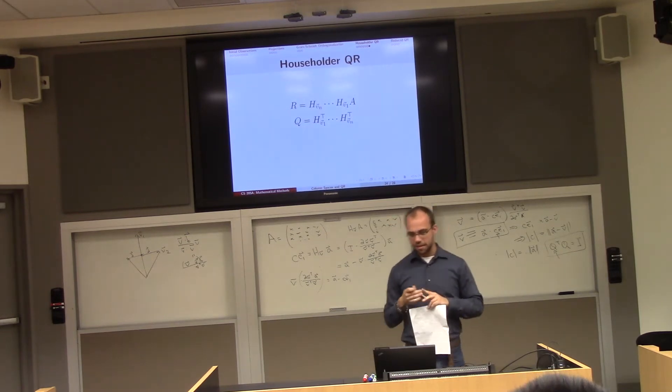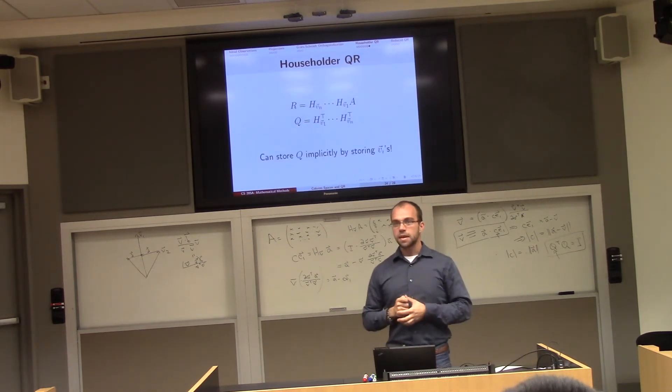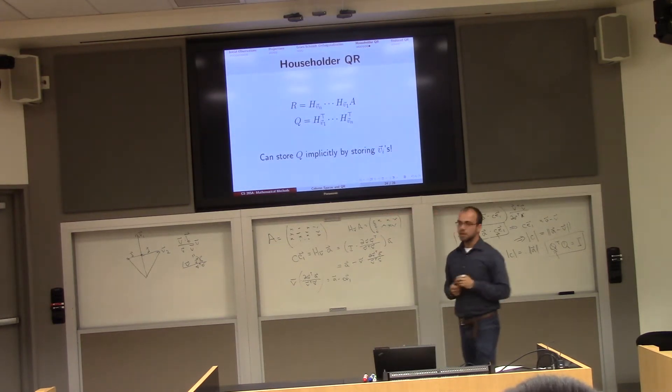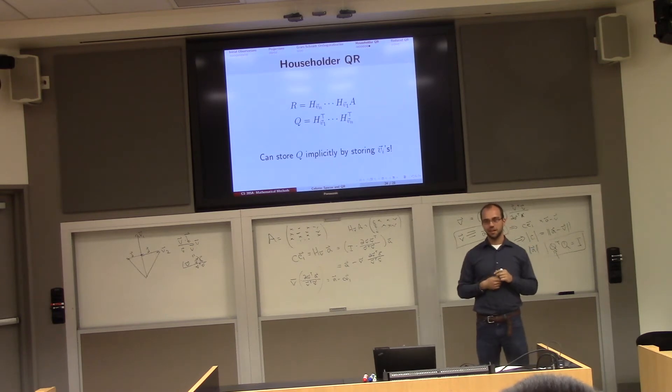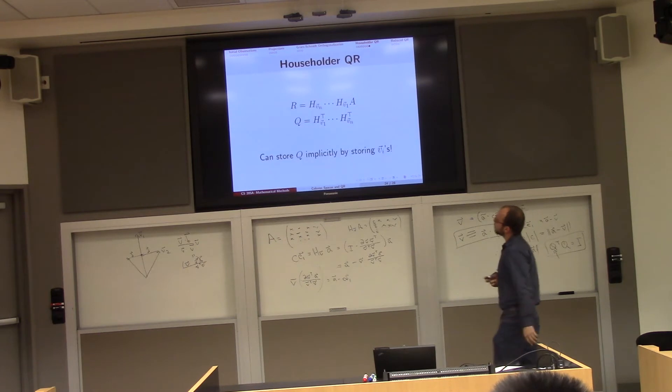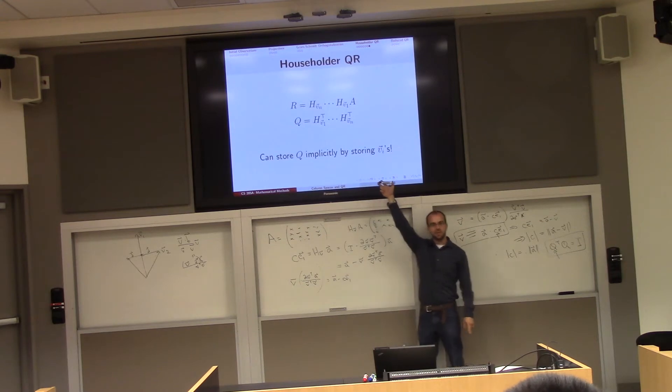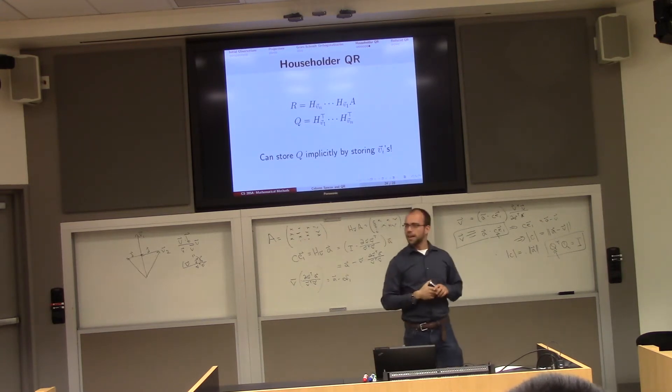In fact, and we'll come back to this in just a moment, if our matrix A has not too many columns and a lot of rows, then this matrix Q is going to be very large because it's going to be rows by rows. And so one way that we can store Q implicitly is by just storing a list of these vectors V. So there's a much shorter list.